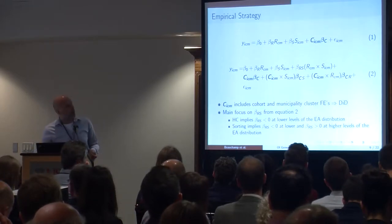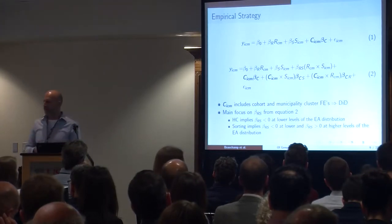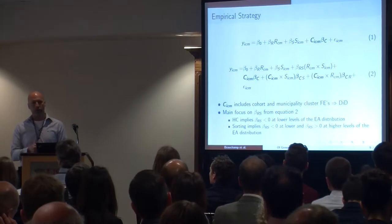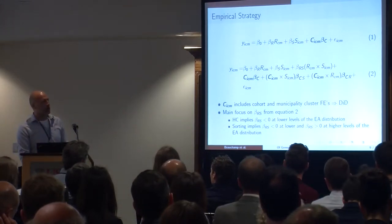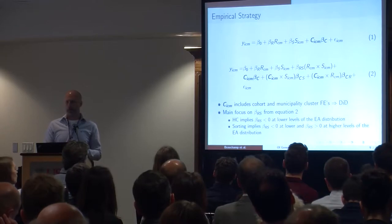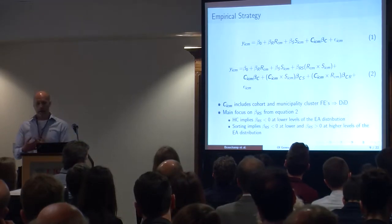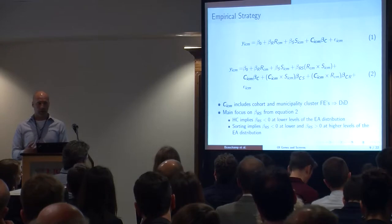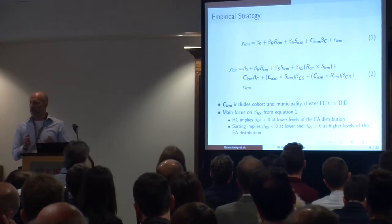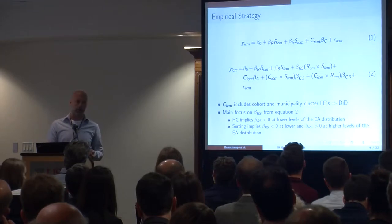In the interaction model — equation two — the main focus is on the coefficient beta_RS, which captures the interaction between the reform and the polygenic score. This tells us whether the reform impact increases or decreases as a function of the polygenic score.